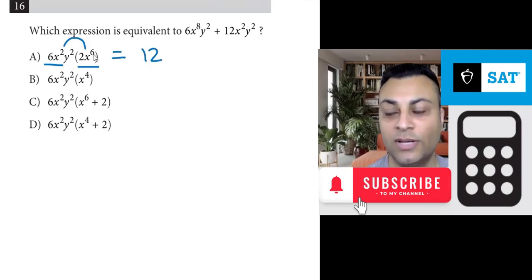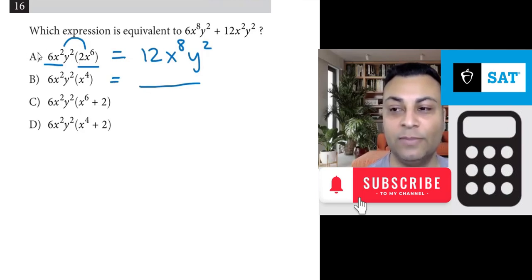x squared and x to the sixth gives you x to the eighth. You add the exponents and y squared. And the same with this. You're going to get a one-term answer. So these two will give you monomials. So a and b are out because we have a binomial to begin with.